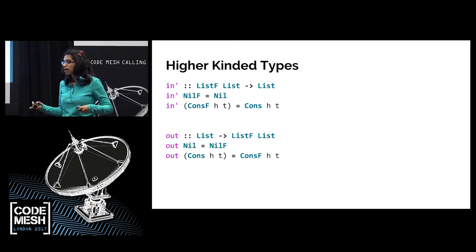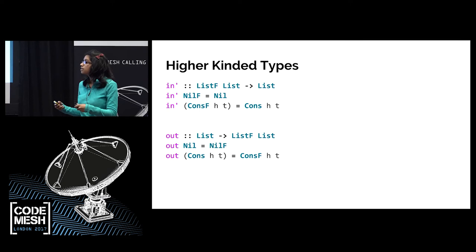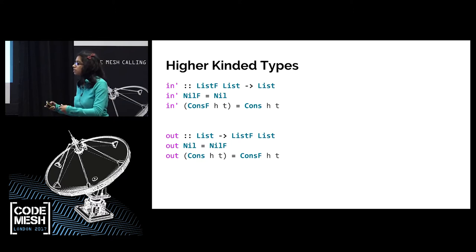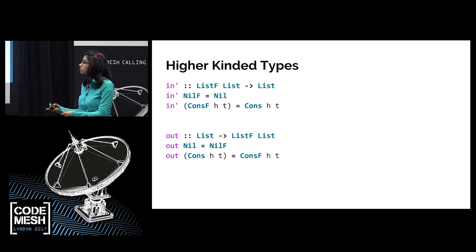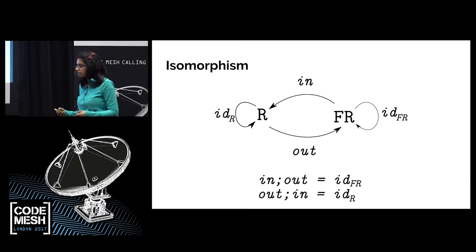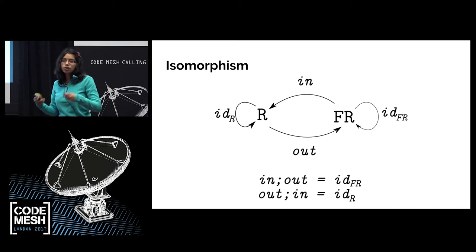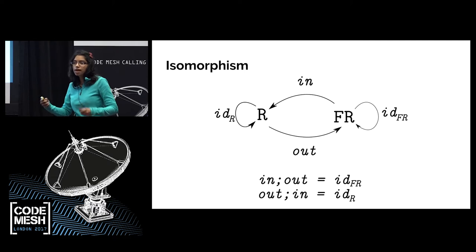What we mean is that I can convert from `ListF (List)` into a `List` without losing any information. I can go from `NilF` to `Nil`, and from `ConsF head tail` to `Cons head tail` provided the tail is a list. So I can go from a `ListF` to a `List`, and I can also do the reverse — from `List` to `ListF (List)`. All I'm really doing is replacing constructors. This is known as an isomorphism — a complicated term for saying these two things are interconvertible without losing anything.